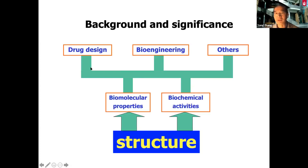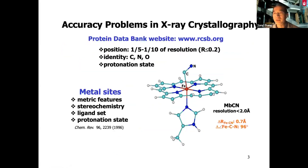Building on that, people can use such knowledge and information to develop a drug or address other kinds of issues. Regarding structure, crystallography is the most widely used technique to determine atomic-level structure. But it also suffers from many kinds of problems — positions, identities, and even protonation state of many structures are actually uncertain.